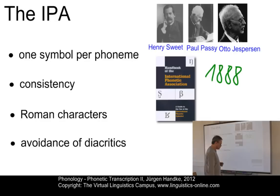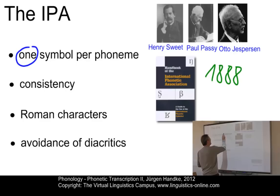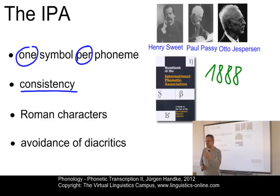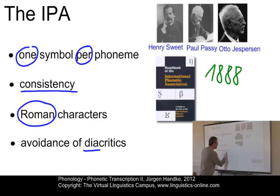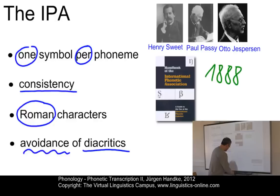Together with this publication, a number of rules were set up. The first rule is quite simple: a transcription for a language should use one separate letter for each distinctive sound — one symbol for one phoneme and not several. It should also be consistent, meaning you should use the same symbol for sounds found across languages. You should use as many Roman characters as possible, and diacritics should be avoided wherever possible.